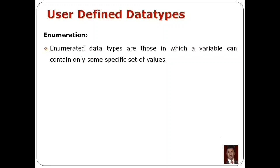Enumerated data types are those in which a variable can contain only some specific set of values. Array holds similar kinds of data in a row. Array, structure, and union hold different types of data collections. But with enumeration, there is a variable, and that variable is limited to some specific set of values — it's a constant. That is called an enumerated data type.